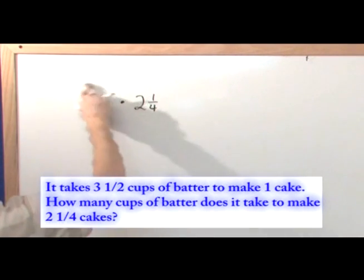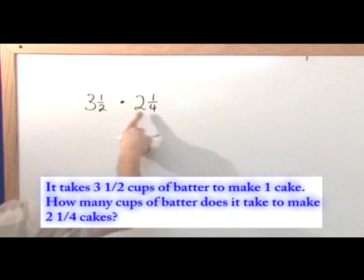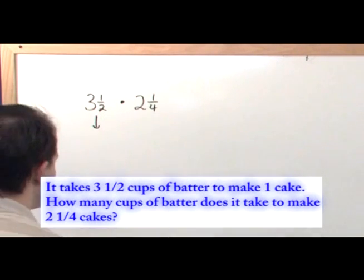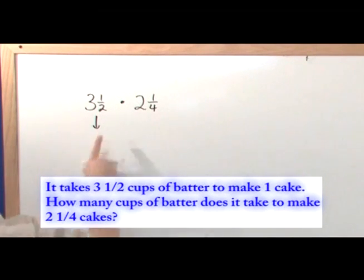We have two mixed fractions, so we want to convert these to improper fractions and then that makes our multiplication really easy. So let's do this. How do we convert this?